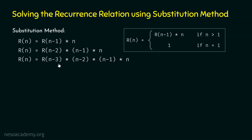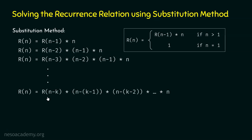Now we can observe a pattern here. When we have R(n-1), we have × n. When we have R(n-2), we have × (n-1) × n. When we have R(n-3), we have × (n-2) × (n-1) × n. So, as we proceed, we can continue up to R(n-k). The constants are decremented by 1 each time. If we have R(n-k), the next value must be (n-k-1), then (n-k-2), and so on up to n. We have generalized R(n) like this.